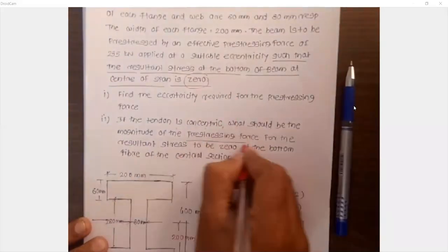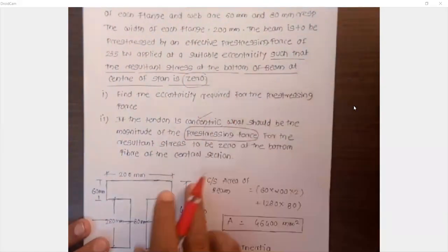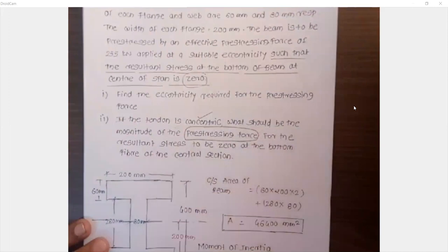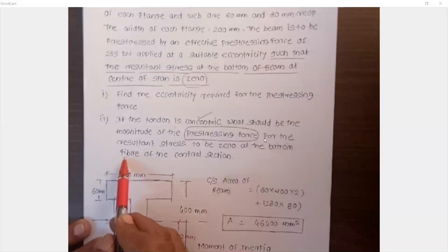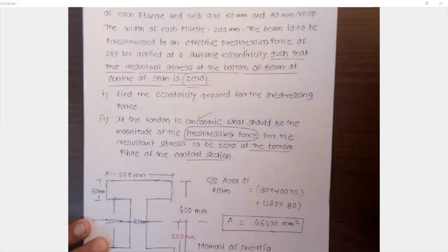We have to calculate the pre-stressing force. What should be the pre-stressing force for the resultant stress to be zero at the bottom fiber of the central section? By considering the eccentricity and zero stress at the bottom, we are going to calculate the pre-stressing force.